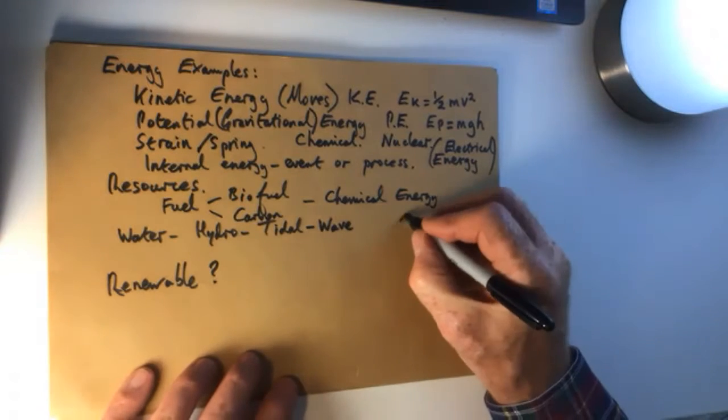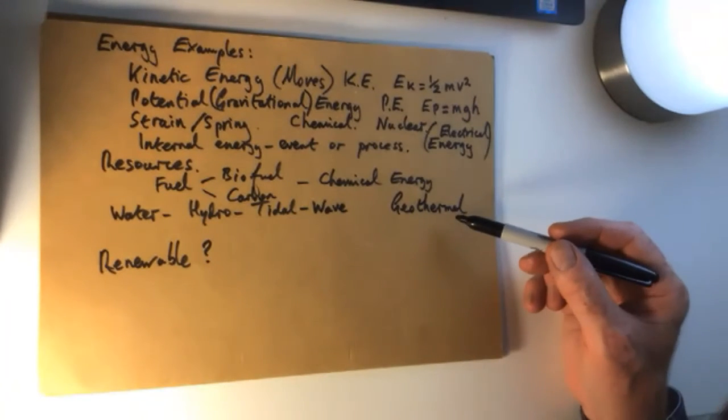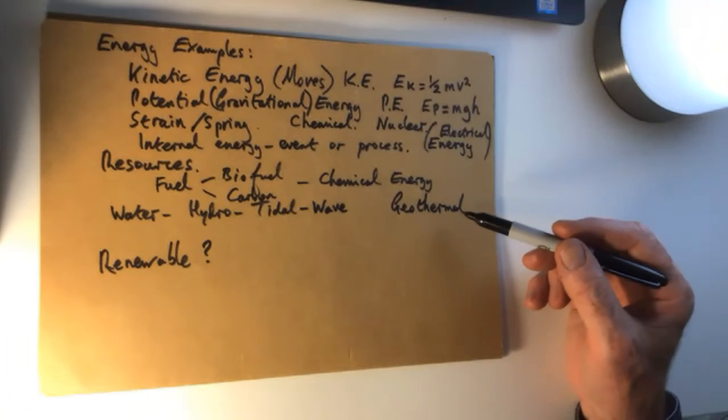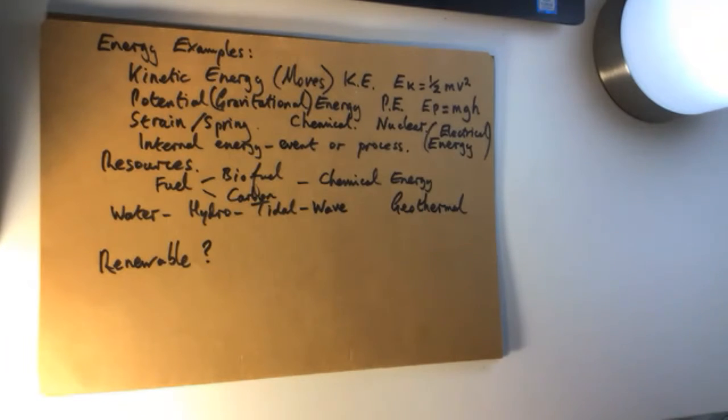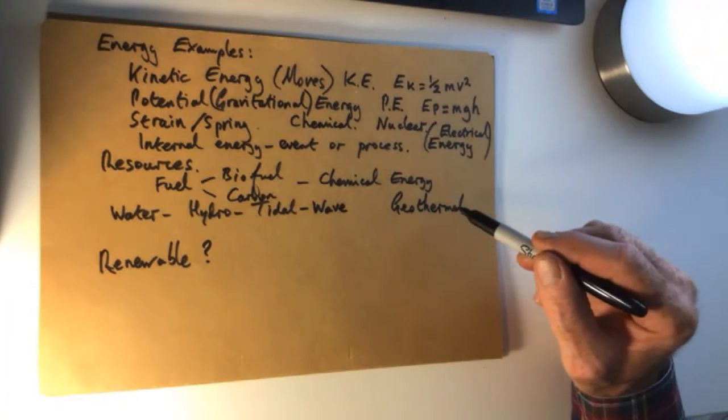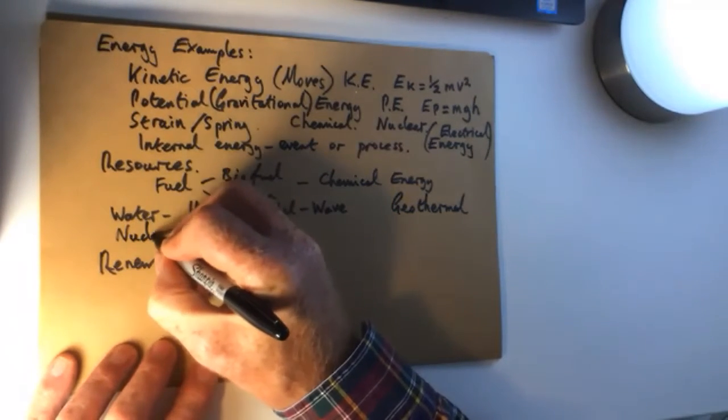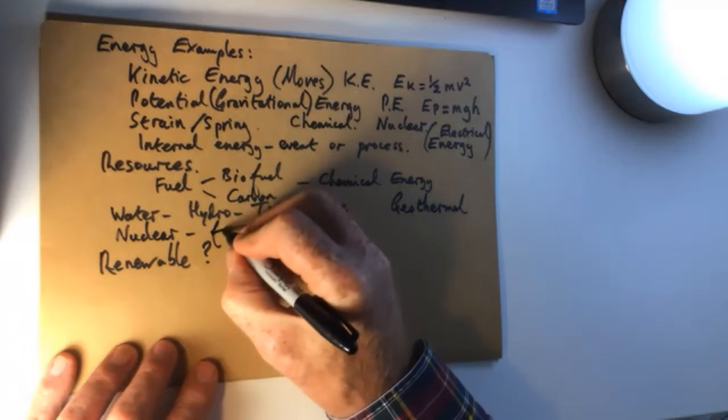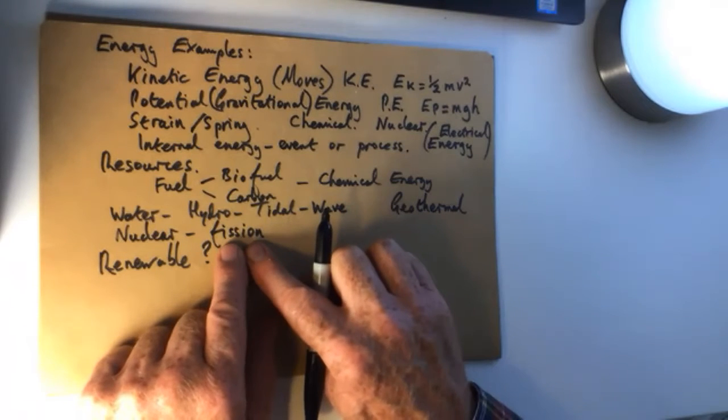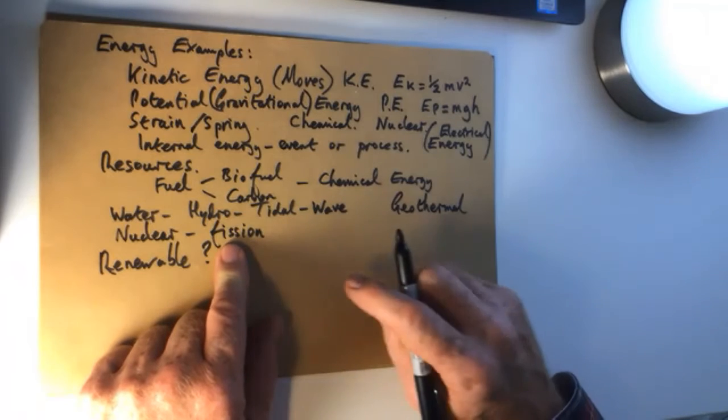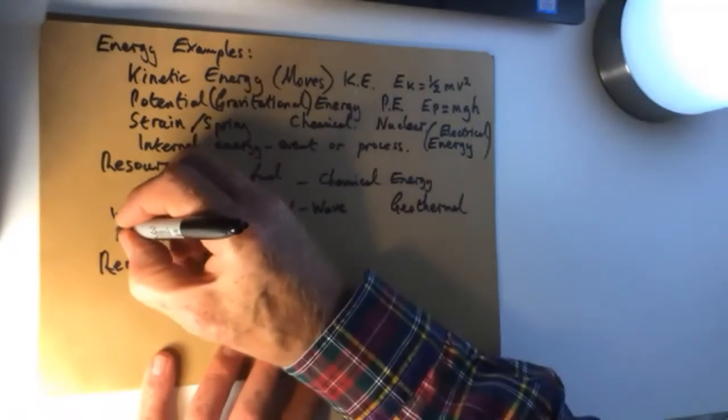So hydro usually depends upon rainfall, can be unpredictable. You can live in a country where they have hydro, but if they have a drought, you then have no power and no water. Tidal, very predictable because we can predict what the tide is going to be in 500 years time or what the tide was 500 years ago. Tide is very predictable. Wave depends upon the weather, and once again, a little bit unpredictable. So tidal is very good for predictability, but very expensive and very difficult to produce. Geothermal, another type of resource. Geo from the Earth, thermal heat. So if you've got a volcanic hotspot, you can put some pipes down. Iceland's a great place for geothermal, and as is New Zealand.